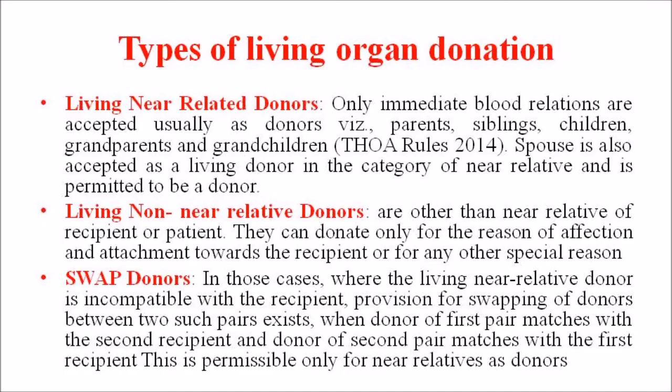The types of living organ donation include three types. The first one is the living near-related donor — only immediate blood relations are accepted usually as donors, like parents, siblings, children, grandparents and grandchildren, according to the THOA rules of 2014. Spouse is also accepted as a living donor in the category of near relative and is permitted to be a donor.